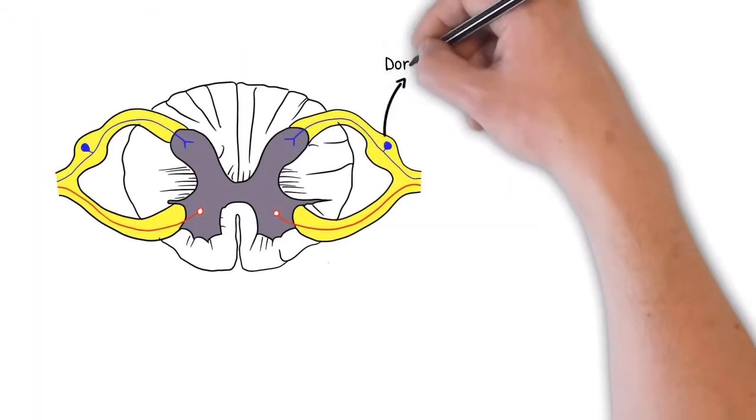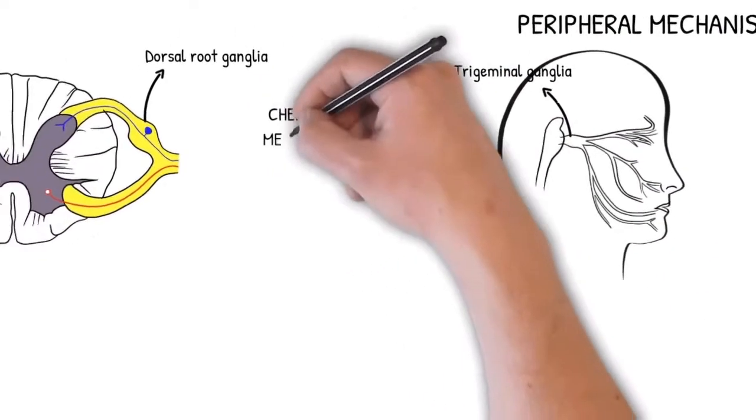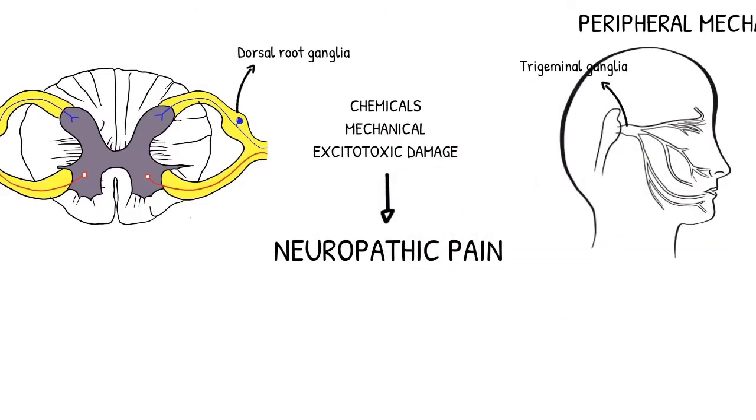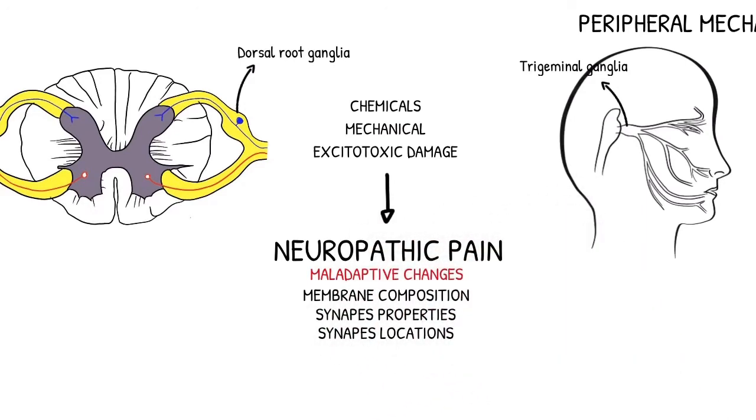In the dorsal root ganglia and trigeminal ganglia, primary afferent cell bodies can be exposed to chemical, mechanical, and excitotoxic damage. In neuropathic pain states, they demonstrate maladaptive changes in their membrane composition, synapse properties, and synapse locations.